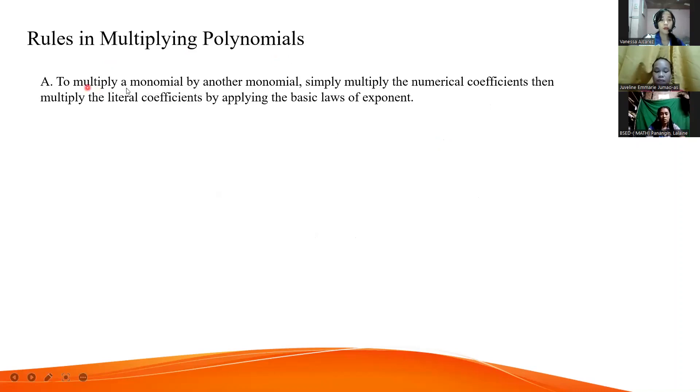To multiply monomial by another monomial, simply multiply the numerical coefficient. Then, multiply the literal coefficient by applying the basic laws of exponent. The numerical coefficient is the constant. Very good, Juveline. And the literal coefficient is the variable including its exponent. Very good, Neil.